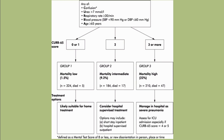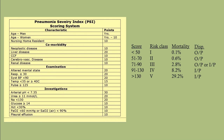The CURB-65 scoring system has largely been supplanted by the PSI — the Pneumonia Severity Index. CURB-65 is still a good way to remember it for your exam as it is sufficient. You don't need to memorize all the details of PSI, but these systems are primarily used to guide whether we admit the patient or not.